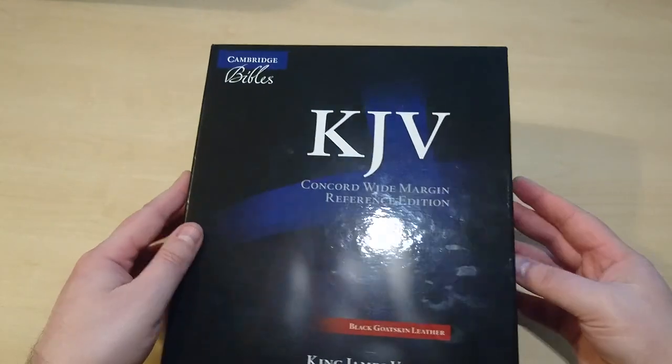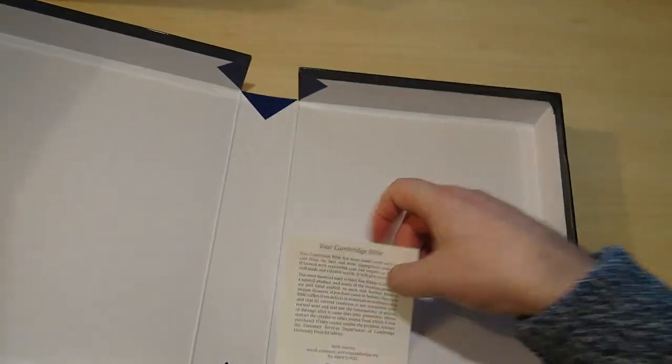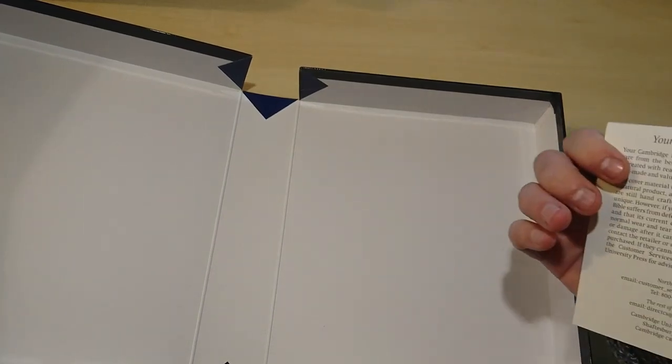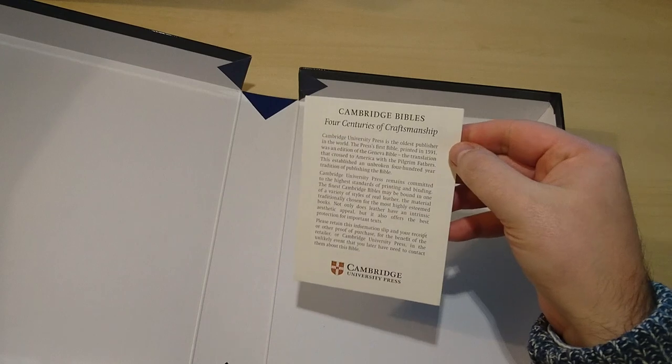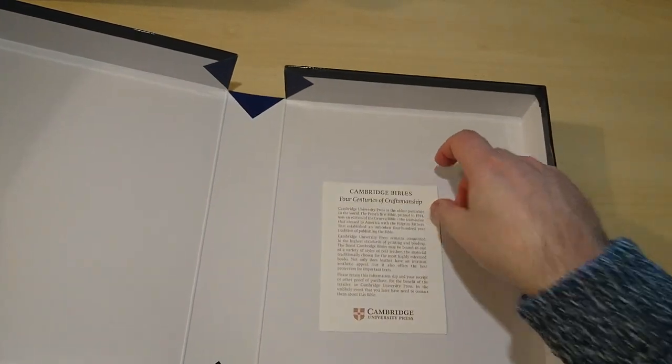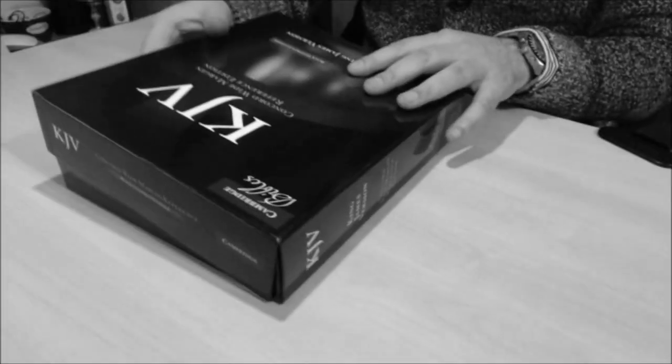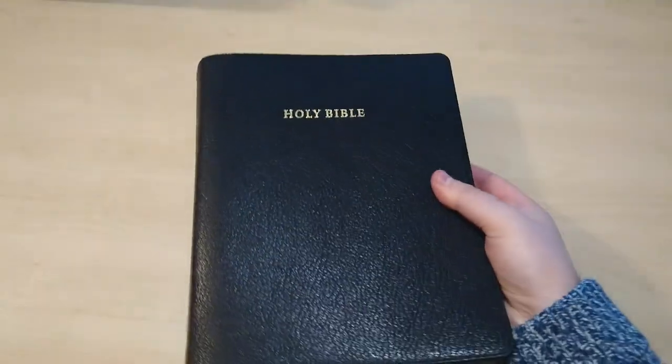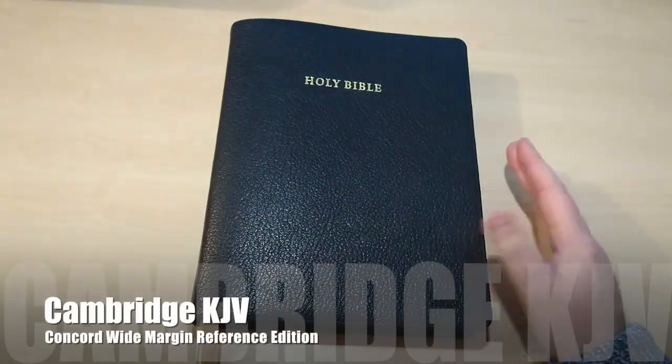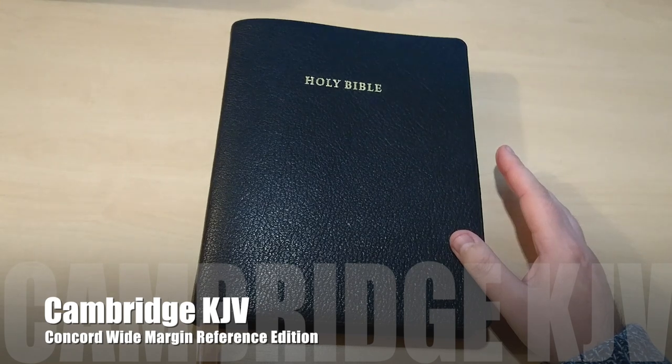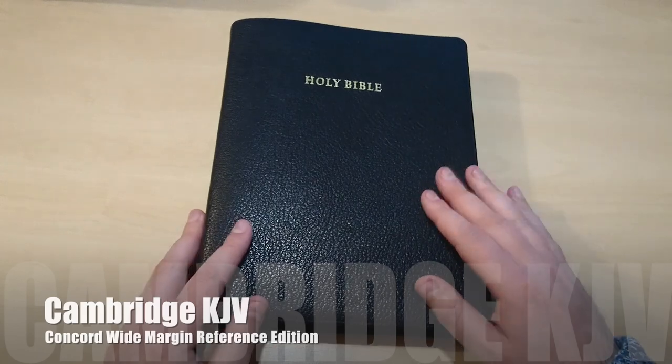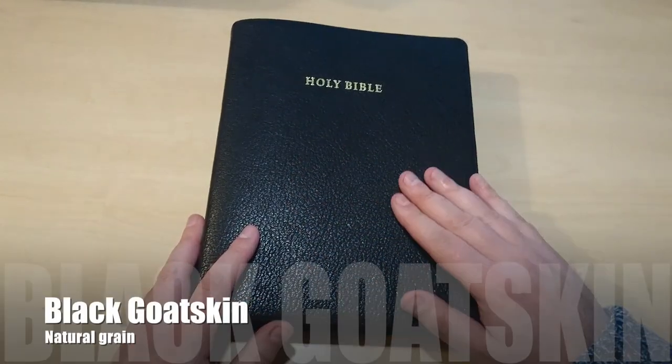This is the box it comes in, a very nice box. It comes also with this certificate from Cambridge Bibles, just to tell you that this is actually one of their Bibles. Here is the Cambridge Wide Margin, and it's called Concord Wide Margin reference edition.